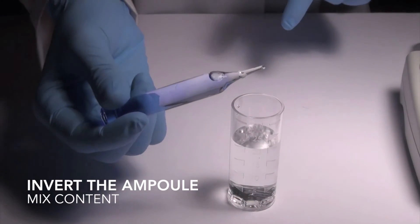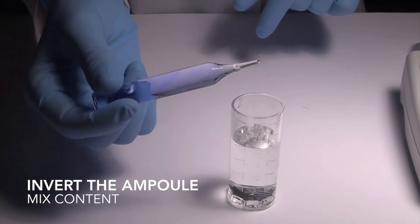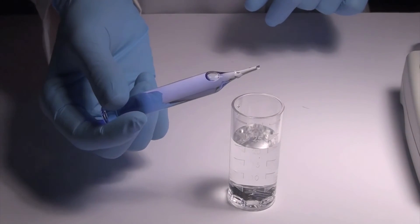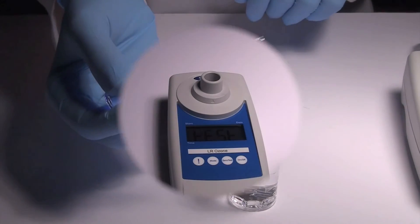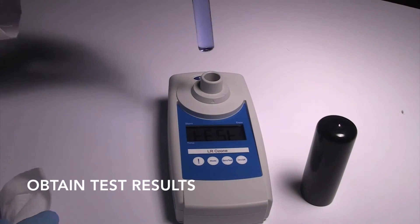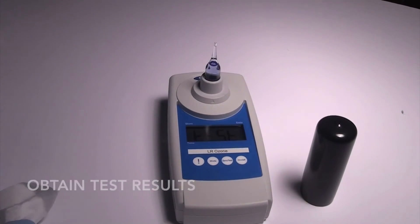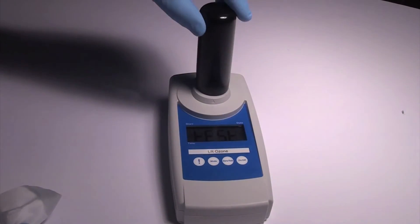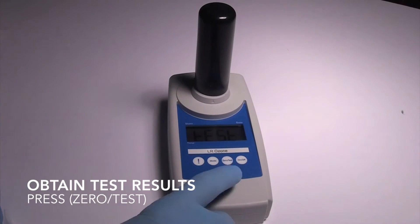Gently invert the ampoule continuously for 30 seconds, allowing the bubble to travel from end to end. Dry the ampoule and insert it into the photometer, flat end first. Place the light shield over the ampoule and press zero test. The SAM photometer will display a test result in parts per million ozone.